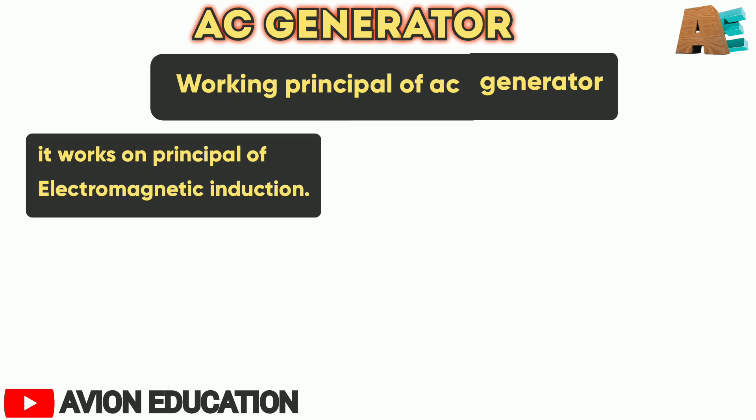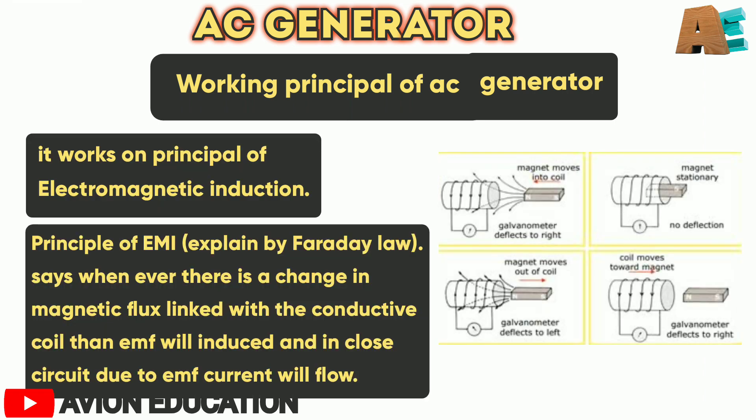The working principle of an AC generator is based on electromagnetic induction. Faraday's law explains this very clearly: whenever there is a change in the magnetic flux linked with a conductive coil, an EMF is induced, and in a closed circuit, due to that induced EMF or potential difference, an induced current will flow.